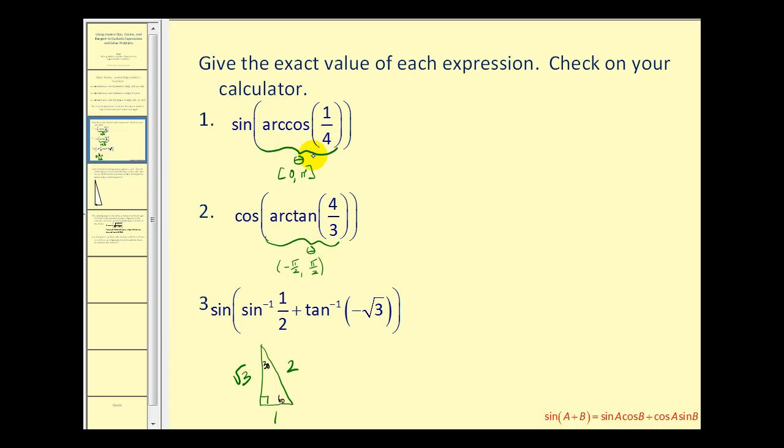Once we find that angle, or at least model it, then we'll find the sine of it. So let's go ahead and sketch a model of this angle θ. We know the angle must be in either the first or second quadrant, but since the cosine function value is positive, we're going to be in the first quadrant.